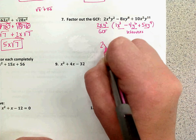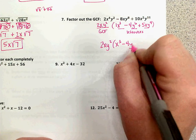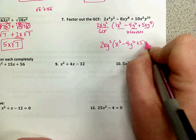So that's my answer. Two x y to the second times x to the third minus four y to the sixth plus five x y to the ninth.